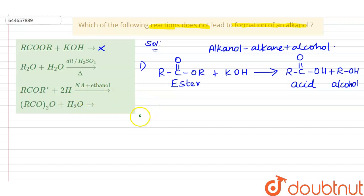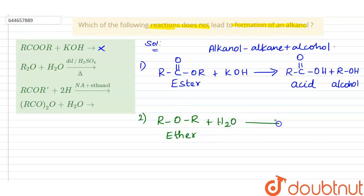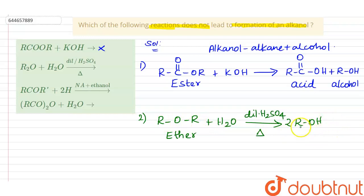The second option is R₂O with water. R₂O can be written as ROR, which is nothing but an ether. When ether undergoes hydrolysis in the presence of dilute sulfuric acid and heat, there will be formation of alcohol. As both alkyl groups are the same, there will be formation of two moles of the same alcohol. If the alkyl groups were different, two different alcohols would form. Since this reaction also produces alcohol — that is, alkanol — it is not the answer.